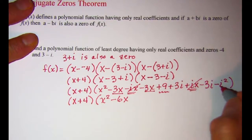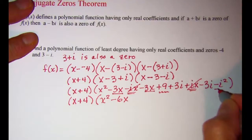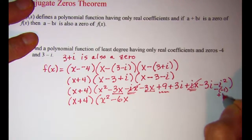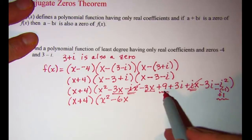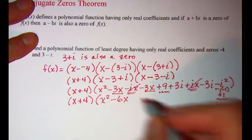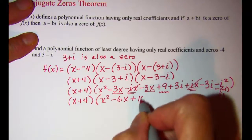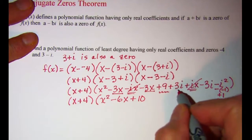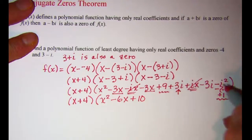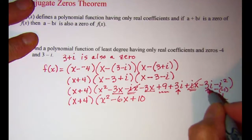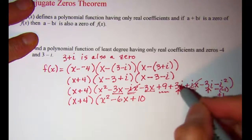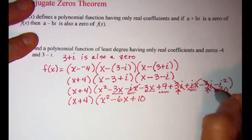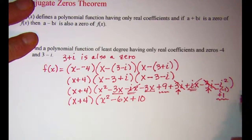Negative i squared is the same as minus negative 1, so that's plus 1. I'm going to combine my 9 and my 1 and get plus 10. Then I have 3i and negative 3i and those are going to cancel. So the trinomial simplifies to x squared minus 6x plus 10.